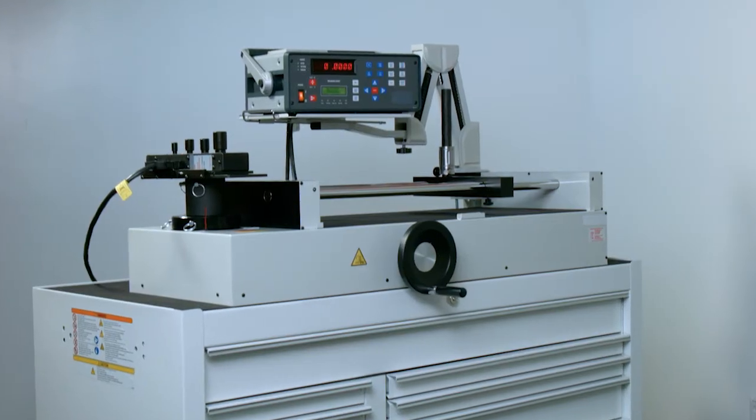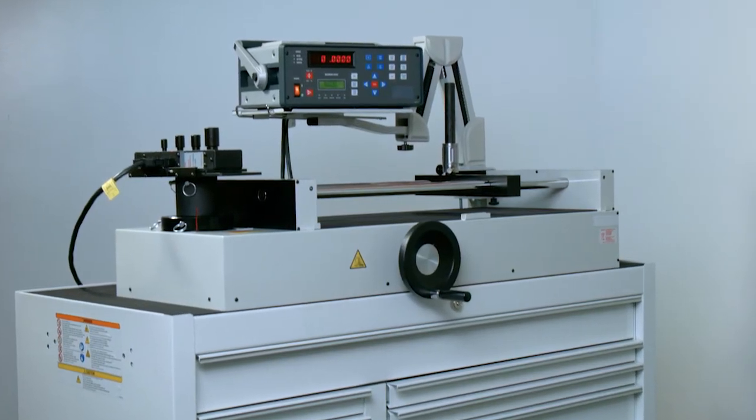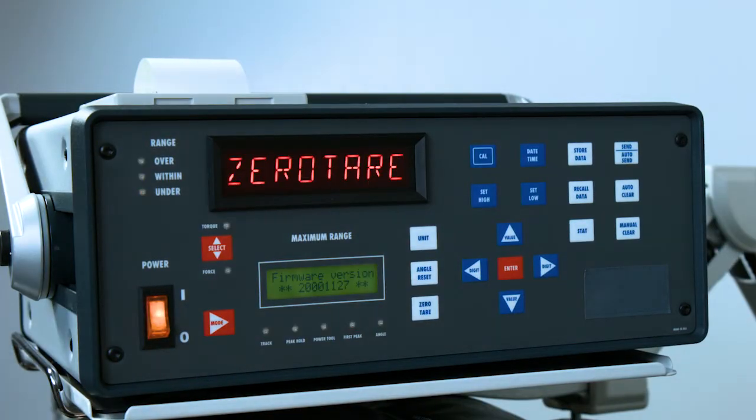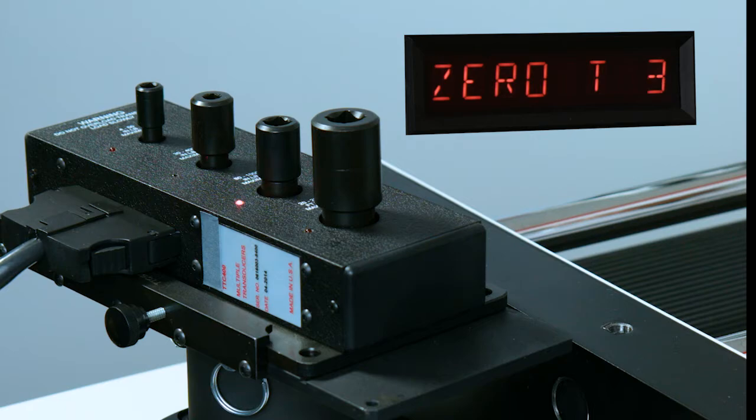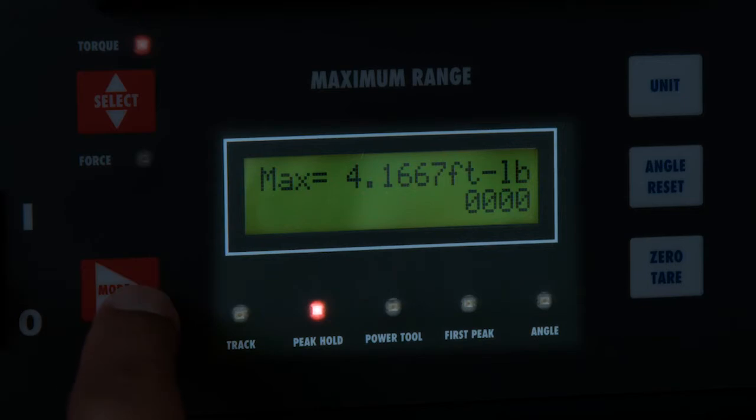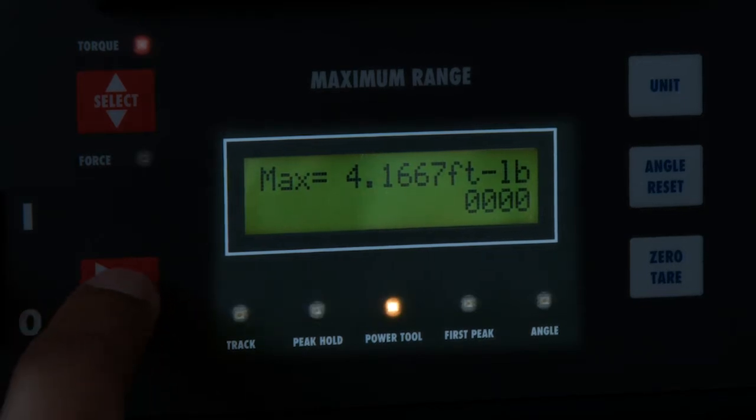The 6-inch heavy-duty all-steel casters make moving the system a breeze, and also can be removed for a more permanent installation. When powered up, the system performs a full diagnostic check, and all transducers are zero-teared. The system has four modes of operation: track, peak hold, power tool, and first peak.